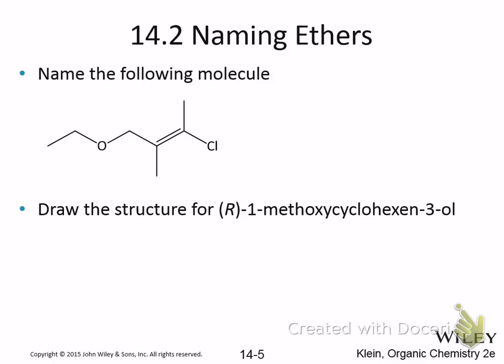We could number this a couple of different ways — we could go 1, 2, 3, 4 from one end, or 1, 2, 3, 4 from the other. Since the ethoxy group is on the number 1 carbon and the other substituent would be on the number 2 carbon, you're going to pick that as 1. So it goes 1, 2, 3, 4.